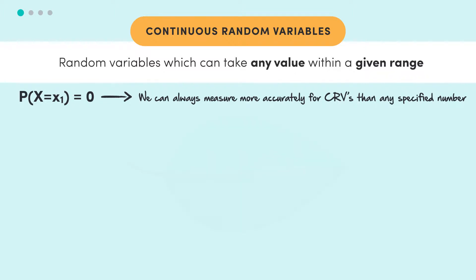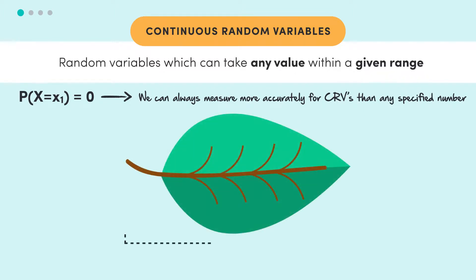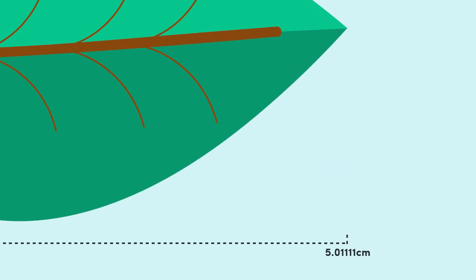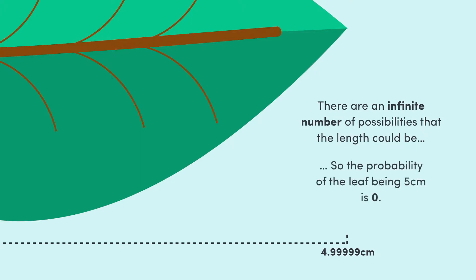For example, what's the probability that a leaf is five centimeters long? Well, no leaf is precisely five centimeters long. It could be 5.011111, could be 4.99999, but because there's an infinite number of possibilities the length could be, the probability of it being exactly five is zero. That means we can't specify the probability that our continuous random variable equals a particular value. So what do we do?